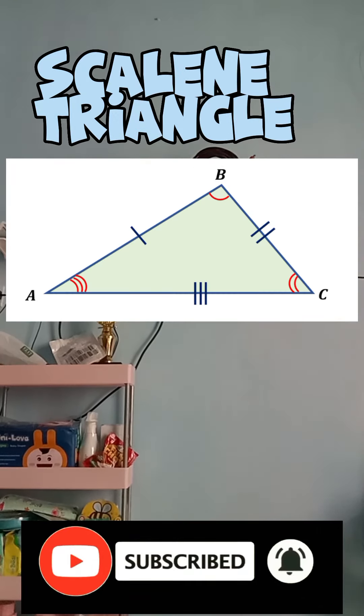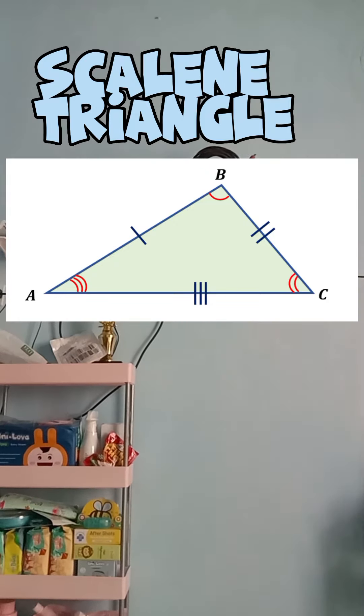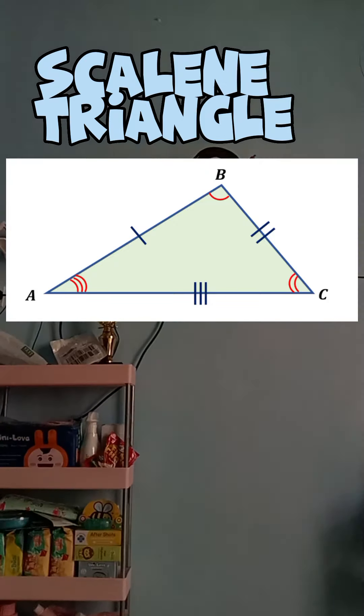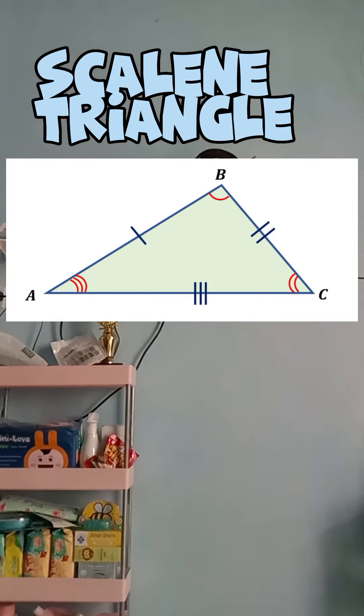A scalene triangle is a triangle in which all three sides are of different lengths and all angles are of different measures. The sum of all the interior angles is always equal to 180 degrees, thus it meets the angle sum property of the triangle.